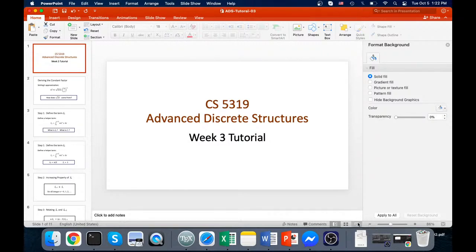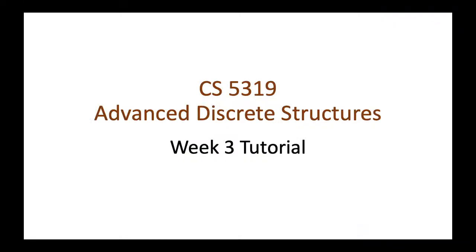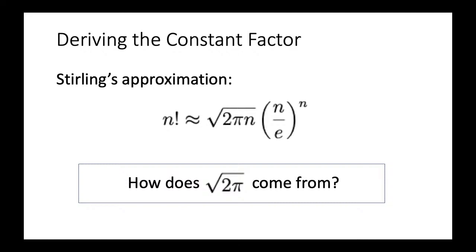I'm very sorry about the delay — it took quite a while to prepare the slides for today. This week we introduced Stirling's approximation, and today's tutorial is about how to derive the constant factor inside it. Recall that Stirling's approximation states that n! is approximately equal to the square root of 2πn multiplied by (n/e)^n. We have this strange term, the square root of 2π — so how does it arise?